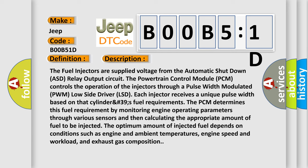The PCM determines this fuel requirement by monitoring engine operating parameters through various sensors and then calculating the appropriate amount of fuel to be injected. The optimum amount of injected fuel depends on conditions such as engine and ambient temperatures, engine speed and workload,